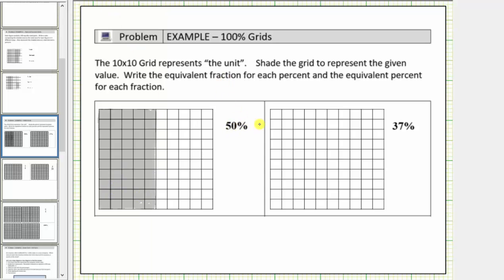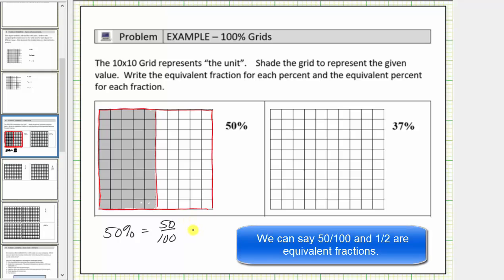Now we're asked to write the percent as a fraction. Because a percent is a number compared to one hundred, as a fraction, fifty percent is equal to fifty hundredths. But this fraction does simplify, which means it can represent one half using smaller pieces. If we go back to our model, notice how if we cut the unit into two equally sized parts, one of the two parts is shaded, which shows fifty hundredths is equal to one half.